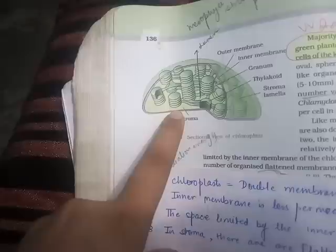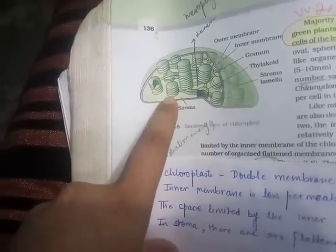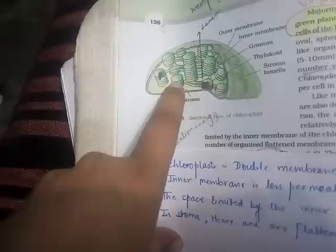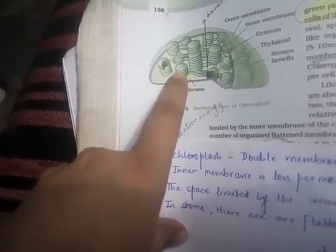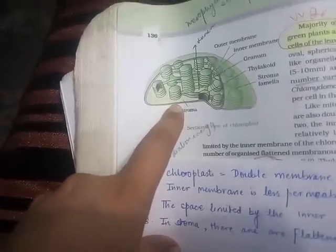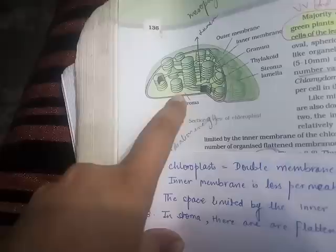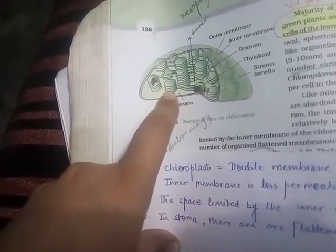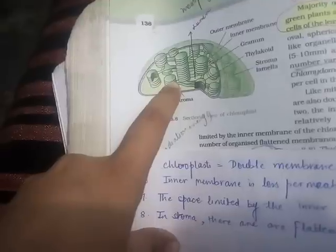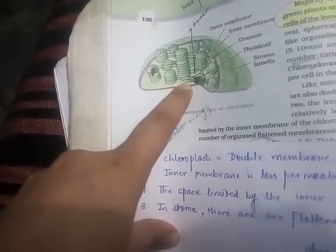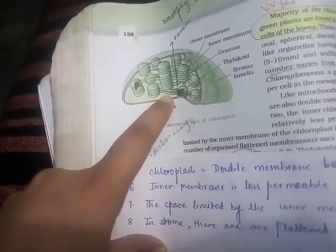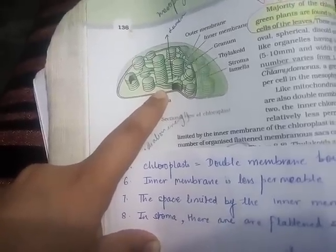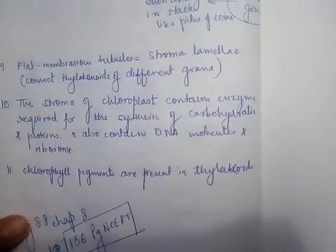Inside the stroma there are flattened structures called thylakoids. When thylakoids are stacked together, the stack is called grana. The flat membrane tubules connecting grana are called stroma lamellae. The stroma of chloroplasts contains enzymes required for synthesis of carbohydrates and proteins.